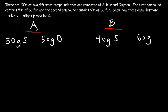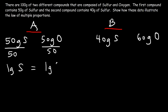For compound B, we have 40 grams of sulfur, which means we have 60 grams of oxygen — 40 plus 60 is 100. To illustrate the law of multiple proportions, we need to get one gram of one of the elements. We can choose sulfur as the first element and oxygen as the second. So for compound A, let's divide both numbers by 50.